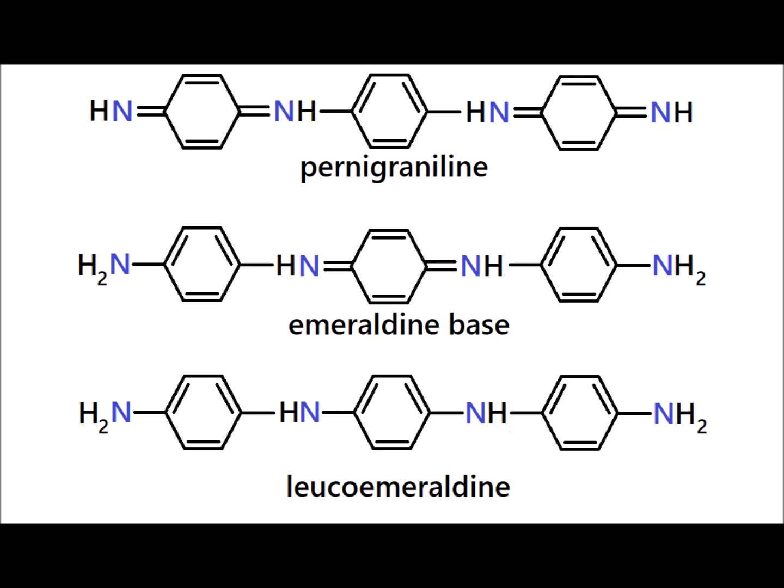By convention, we refer to the most reduced oxidation state — the most benzenoid one, seen at the bottom here — as leucoemeraldine. The intermediate oxidation state, where we have one quinoid and two benzenoid rings, we call the emeraldine, particularly the emeraldine base form. The most oxidized form, with two quinoid rings and only one benzenoid, we call the pernigraniline state.